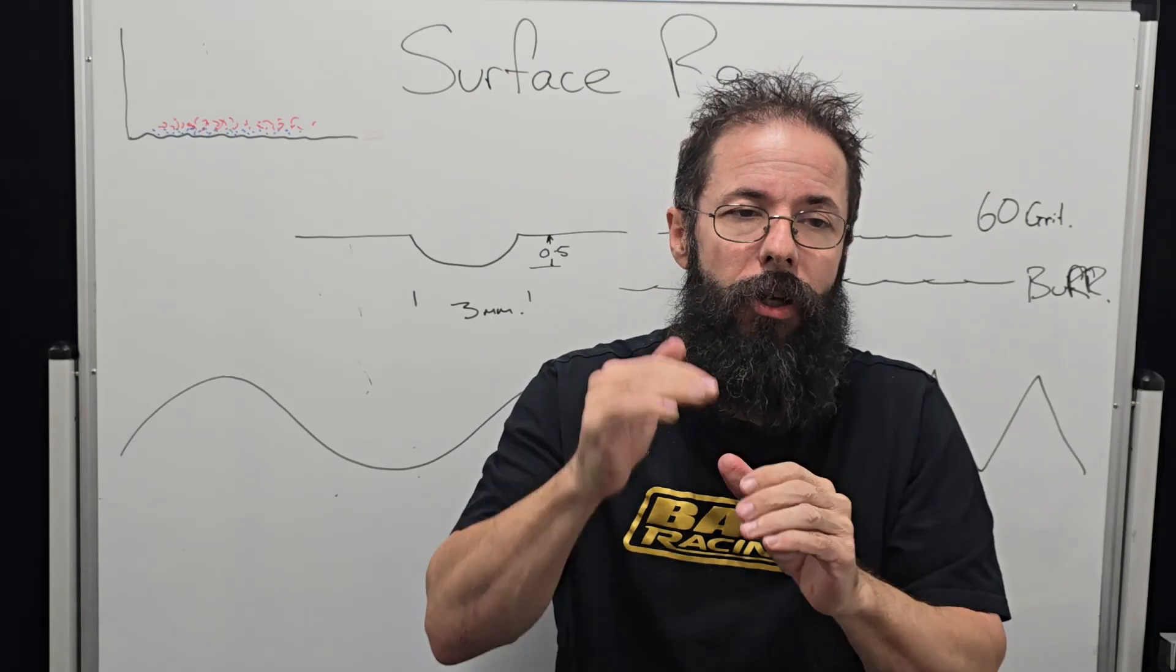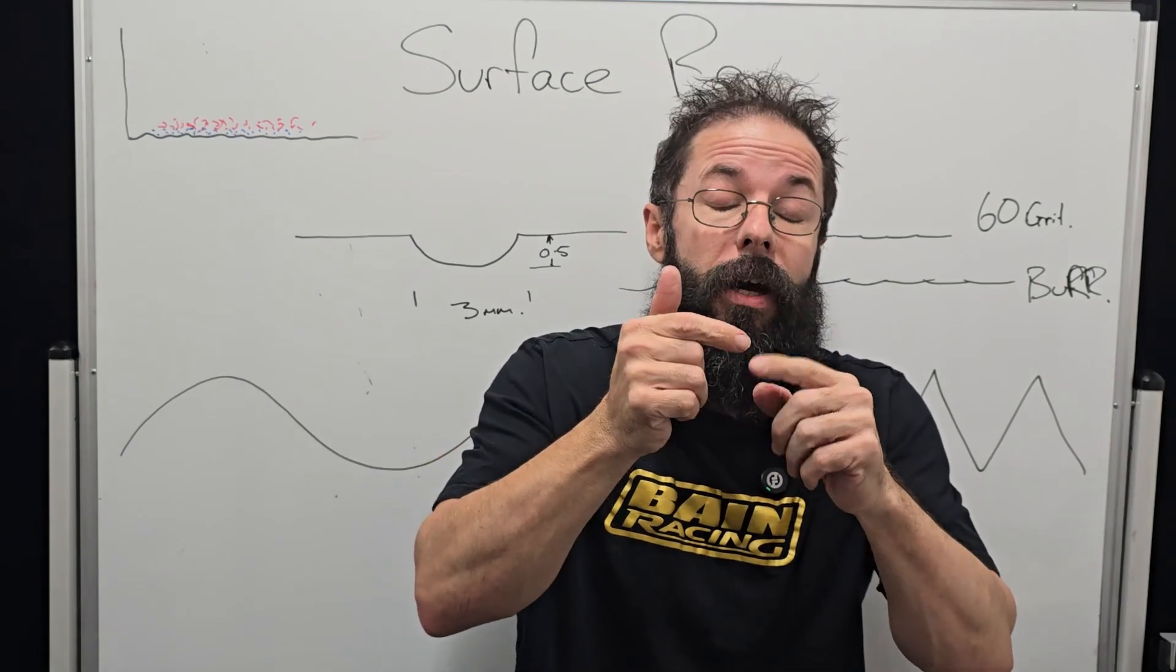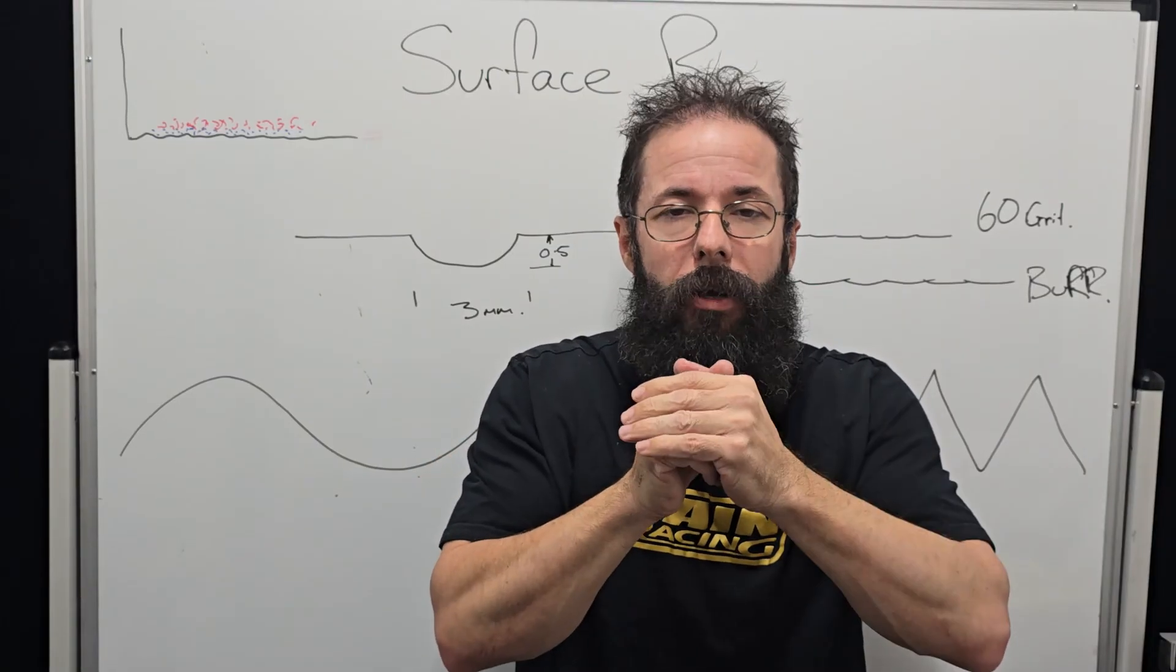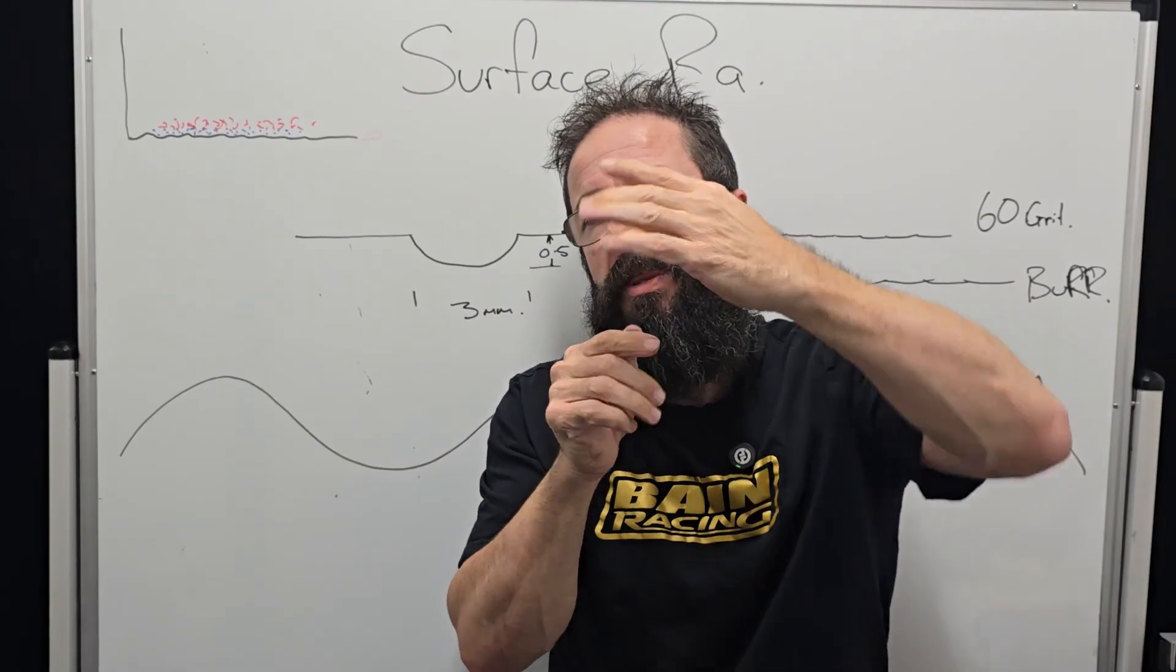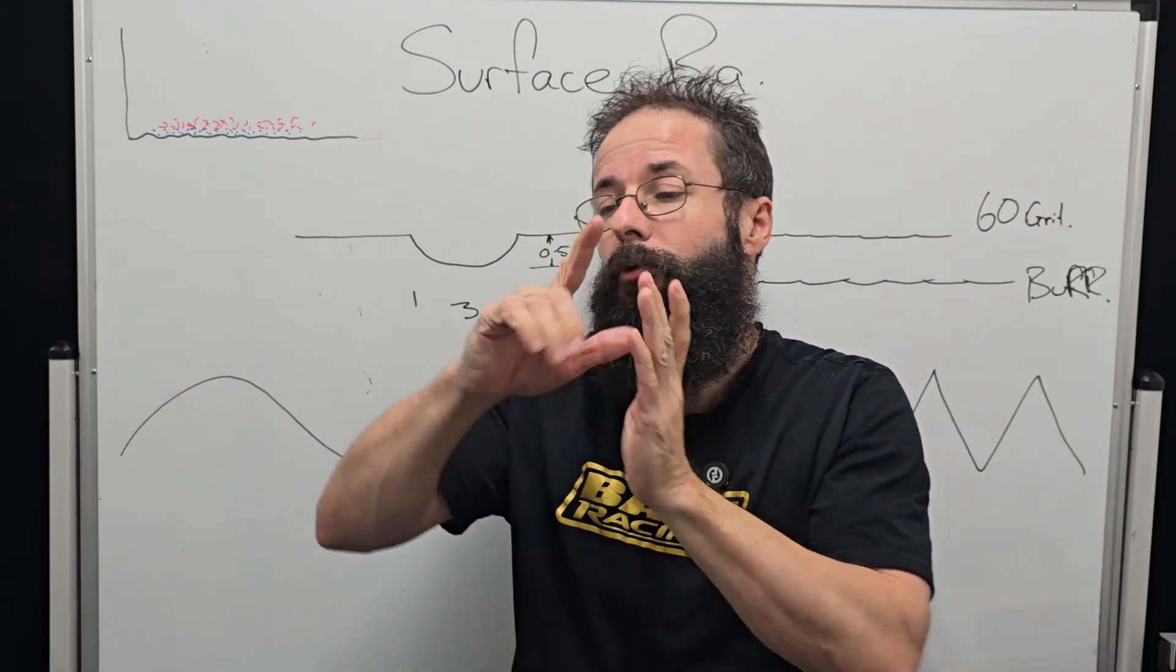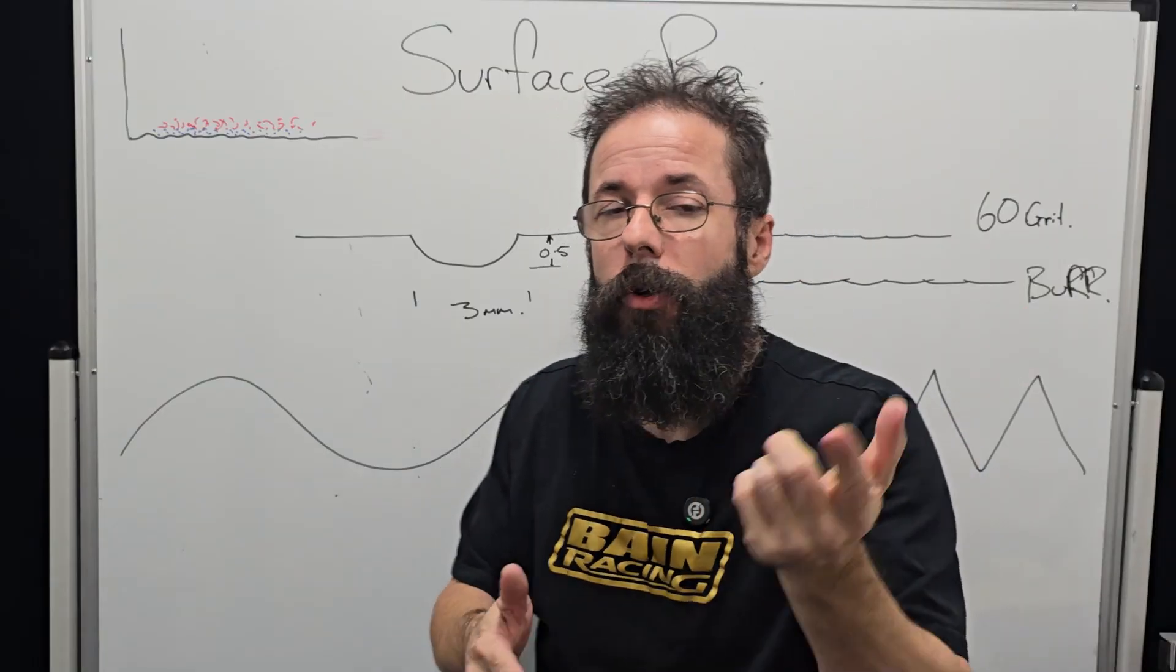In other words, the dimples are holding the air on the ball longer so they turn around the object longer and reduce that negative pressure, that parachute that's holding the golf ball back in the first place. So it's not the actual dimples that make it fly further; the dimples just create more friction in the active boundary condition, cause a boundary swell, and allow that air to not separate off the ball as easy.